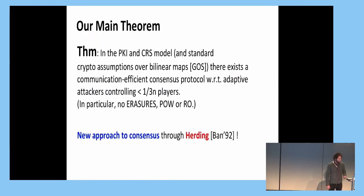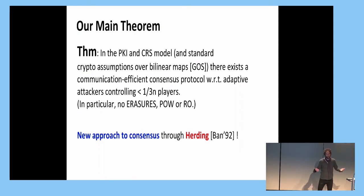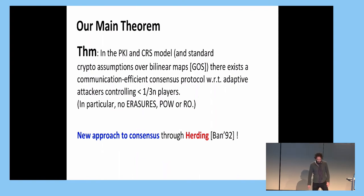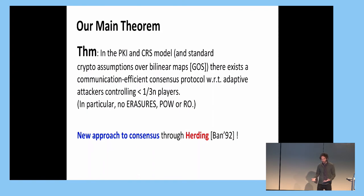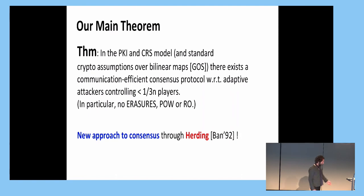To summarize: in the public key model with a common reference string, assuming standard cryptographic assumptions, we get a communication-efficient consensus protocol that handles attackers corrupting up to one-third of the players. We need no erasures, no proof of work, no random oracles. And what is probably the coolest thing is that we use this idea from social science and economics — herding — which is typically viewed as a bad thing, and use it for something good.